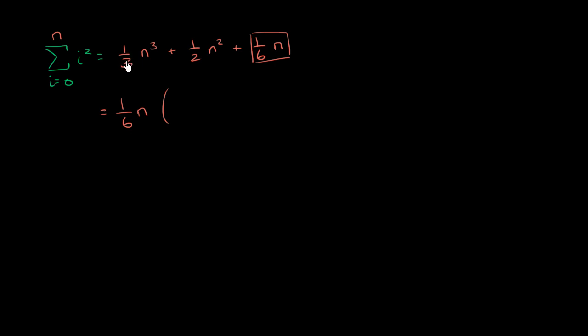So one-third divided by one-sixth is the same thing as one-third times six. So this is going to be equal to 2n squared. And you can verify it: one-sixth times two is two-sixths or one-third, n times n squared is n to the third power. Now, one-half divided by one-sixth is the same thing as one-half times six, which is three. So this term is going to be plus 3 times n. And then finally, this term is just going to be equal to 1.